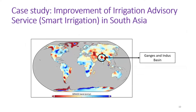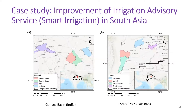Our case study focuses on improving the Irrigation Advisory Service in South Asia. This map shows GRACE data indicating where groundwater is being depleted at a higher rate. The circled regions of eastern Pakistan and northern and eastern India are facing the highest groundwater depletion. We focused on these regions, selecting specific districts — the Ganges basin in India and the Indus basin in Pakistan.